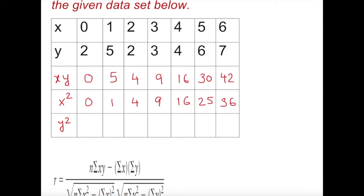Okay. Then we go to the y squared. So same thing: 2 squared, 5 squared, 2 squared, 3 squared, 4 squared, 6 squared, 7 squared. So 2 squared is 4, 5 squared is 25, 2 squared is 4, 3 squared is 9, 4 squared is 16, 6 squared is 36, 7 squared is 49. Very good.